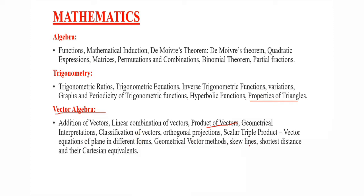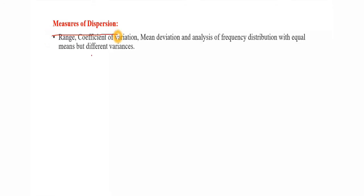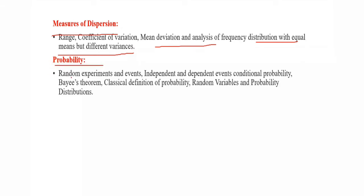Next, we have vector algebra. One of the important topics is skew lines, the shortest distance, and Cartesian equivalence, which is very important. The measurement of dispersions — range, coefficients of variation, and mean deviation — is very important. Distribution with equal mean but different variances. Probability is also a major topic, including the difference between random experiments and events, conditional probability, Bayes' theorem, classical definition of probability, random variable, and probability distributions.